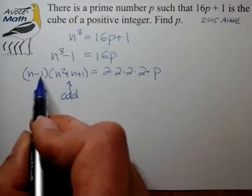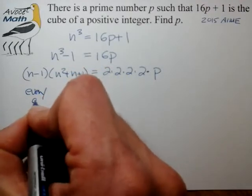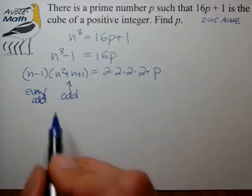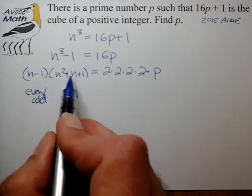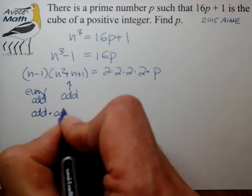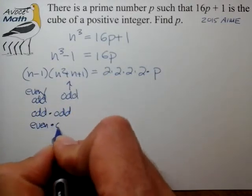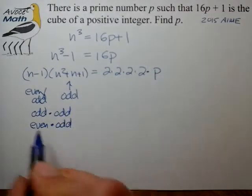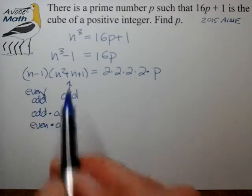We also know that n minus 1 could be even or odd depending on the value of n. And so the two possible possibilities for parity of the expression on the left is either an odd times an odd or an even times an odd. Those are the only two cases that we can see as far as this expression is concerned.